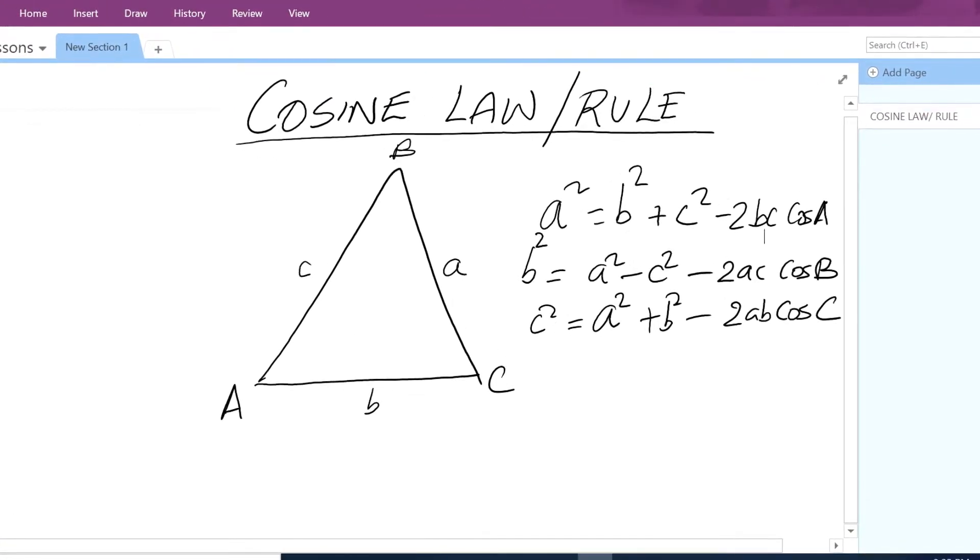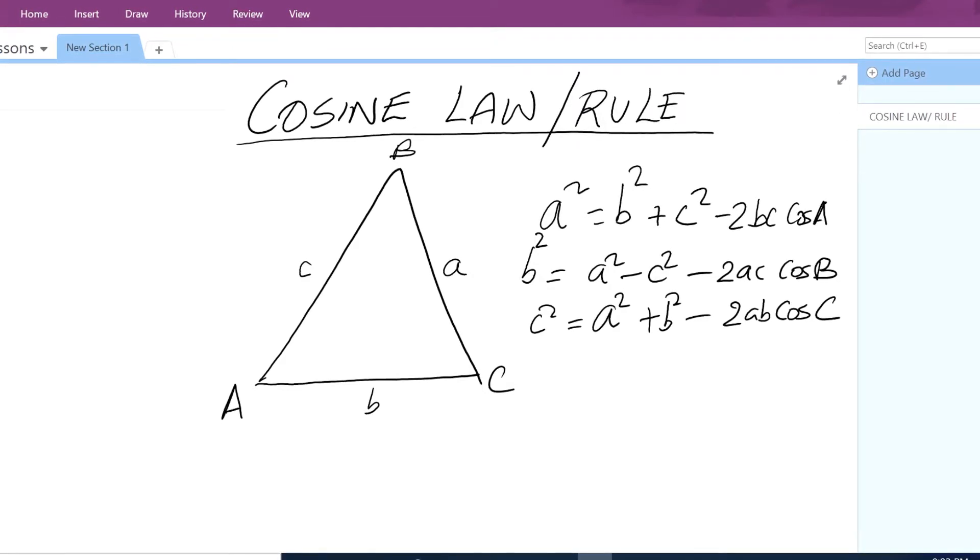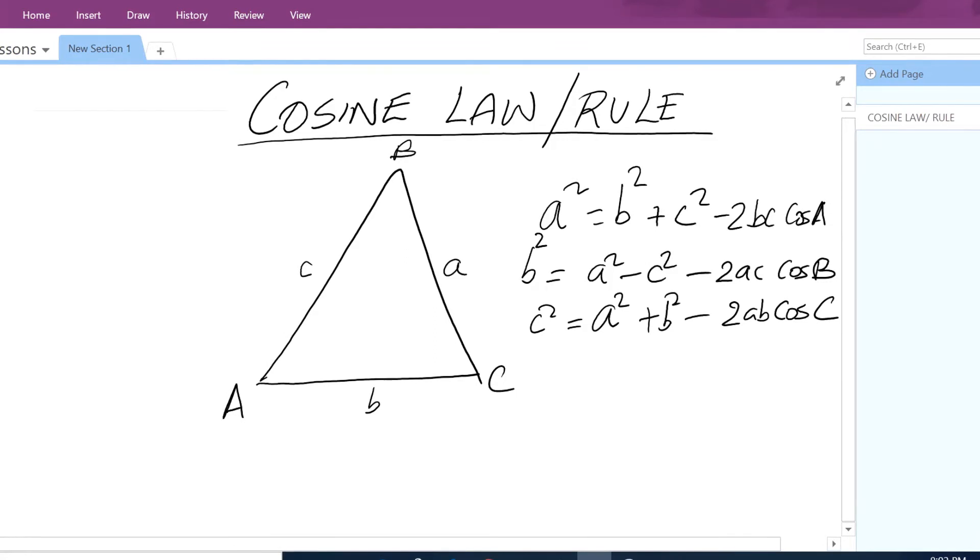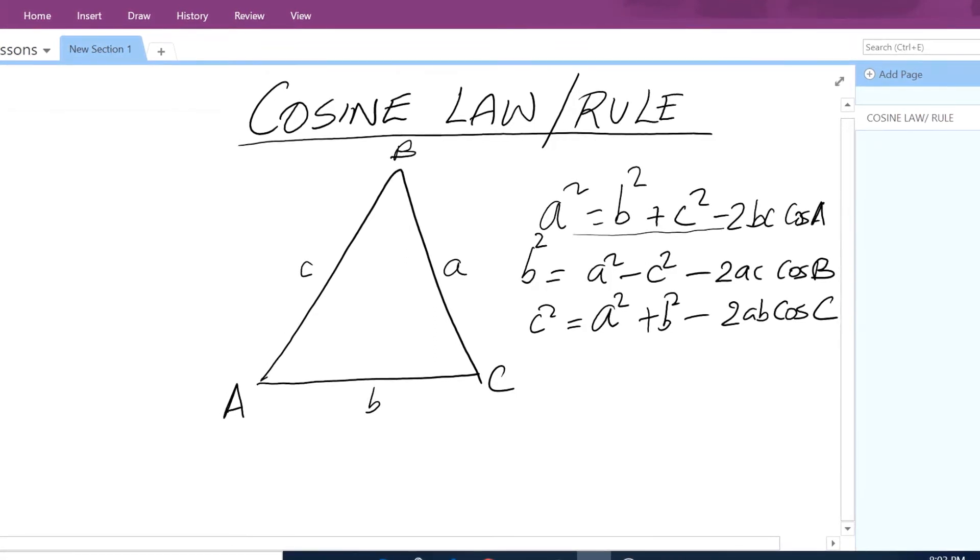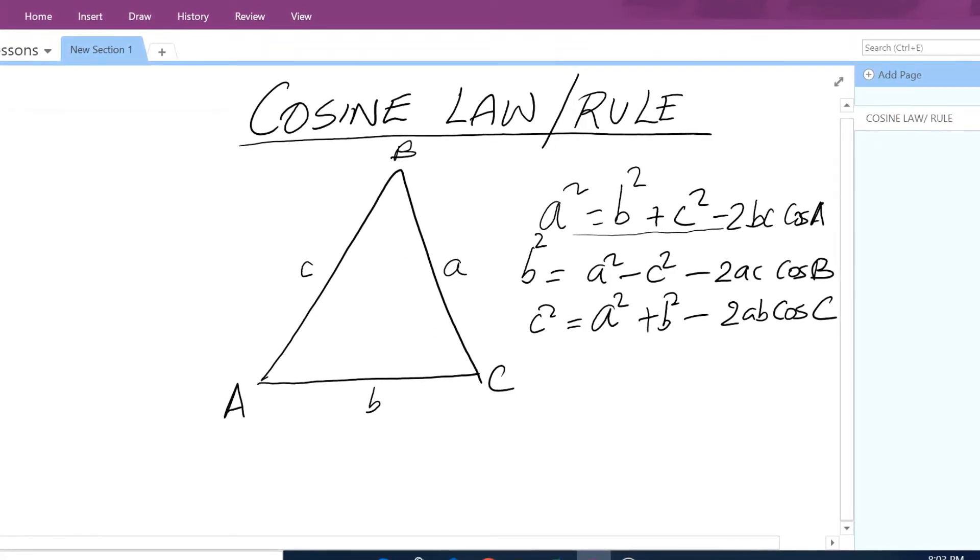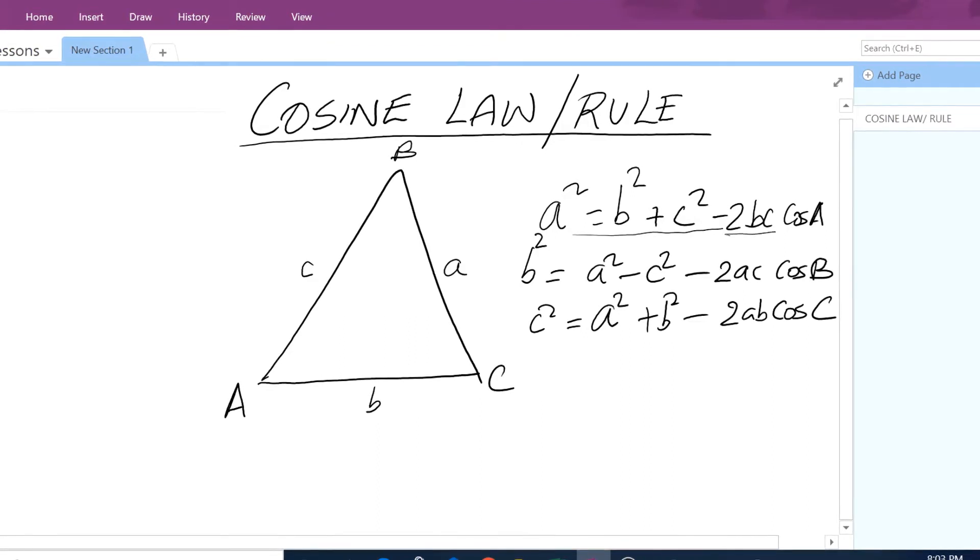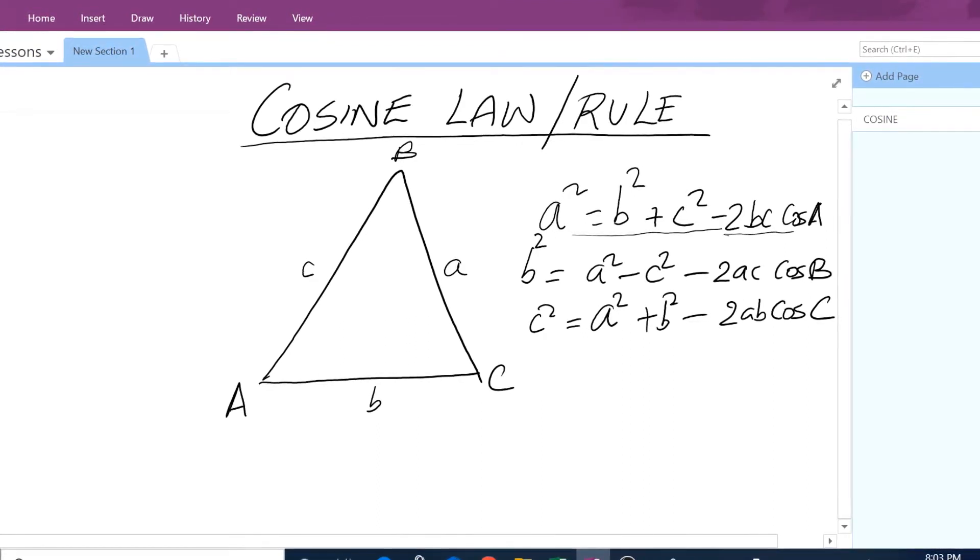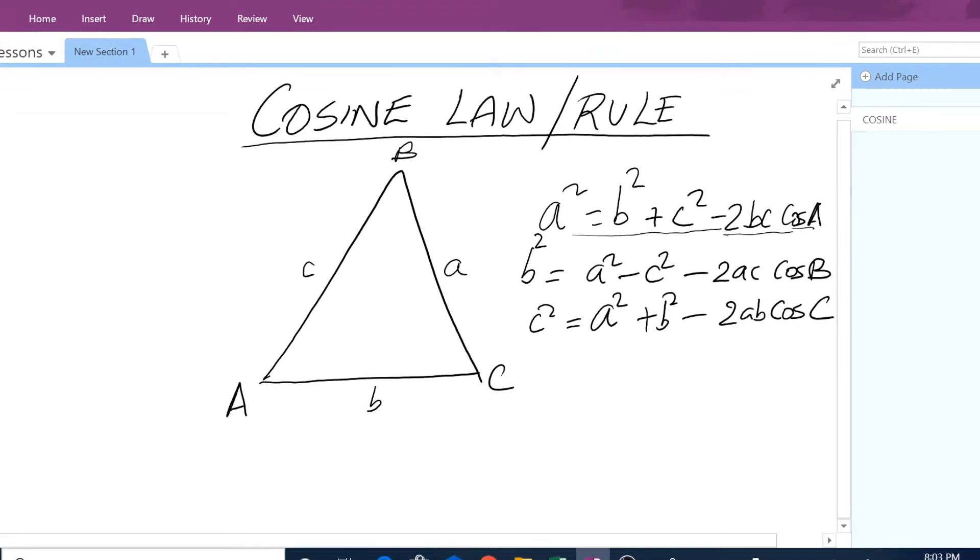The cosine rule is such that you can use any of these three formulas: a squared equals b squared plus c squared minus 2bc cos A, or